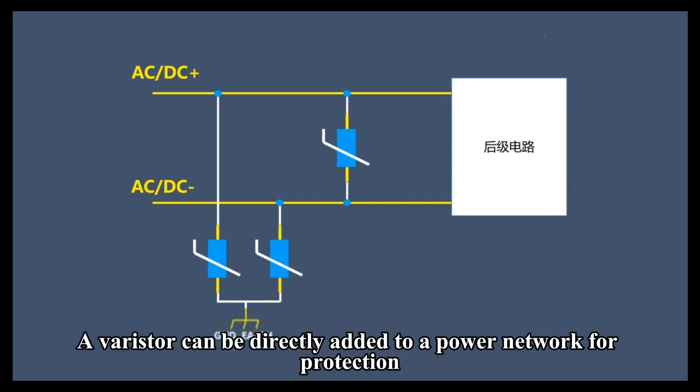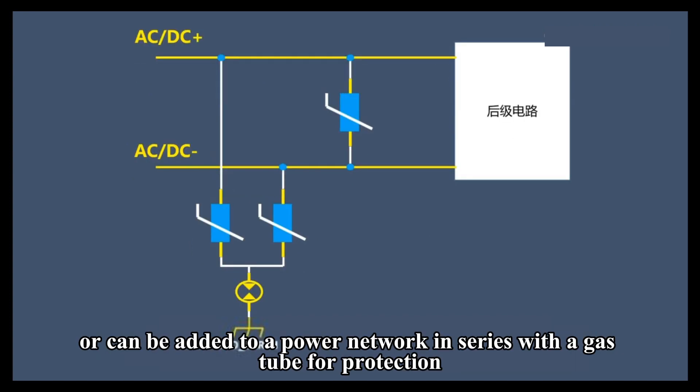A varistor can be directly added to a power network for protection or can be added to a power network in series with a gas tube for protection.